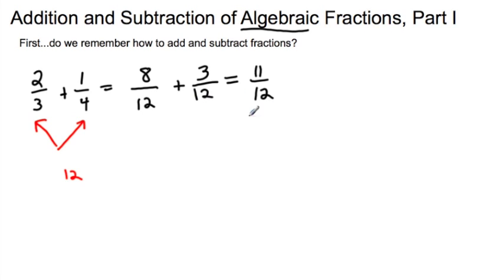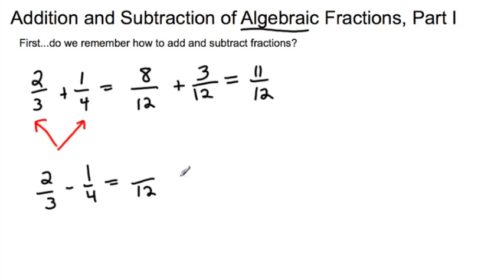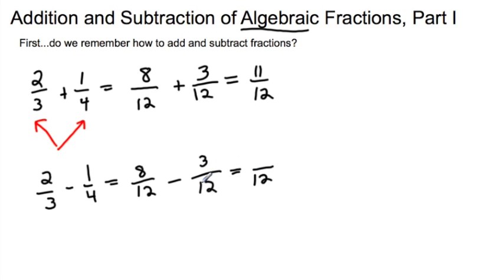If we pick a subtraction problem — two-thirds minus one-fourth — same thing: I need a common denominator, which we already established was twelve. Then I end up with eight-twelfths minus three-twelfths. If I remove three of the twelfths from the eight that I have, I'm left with five-twelfths.